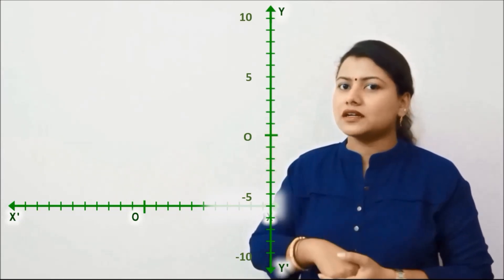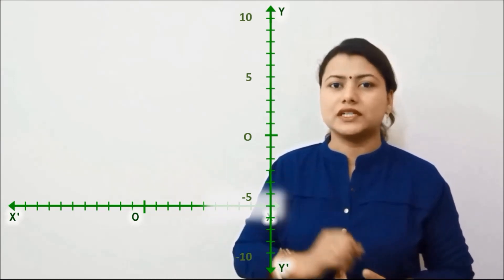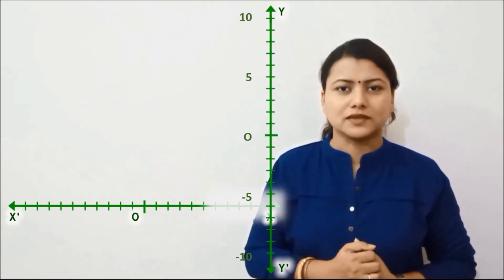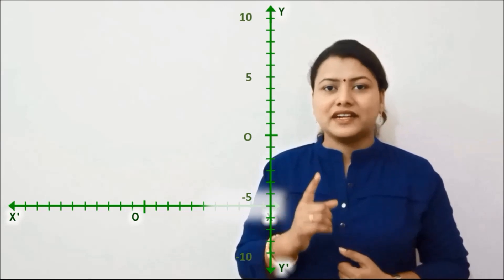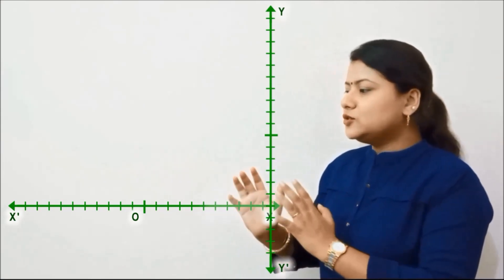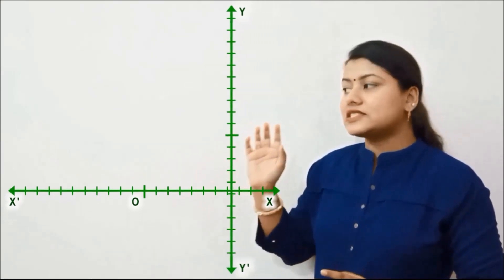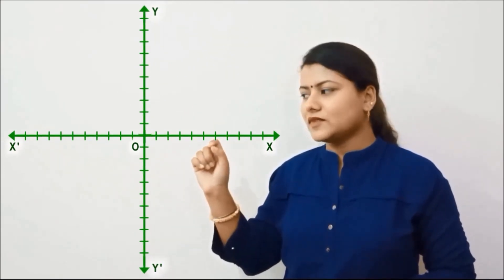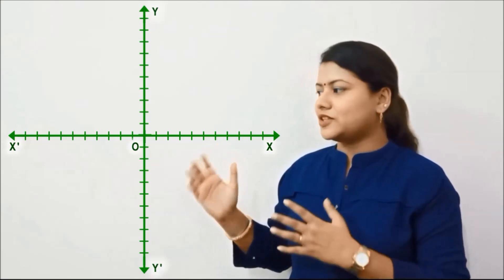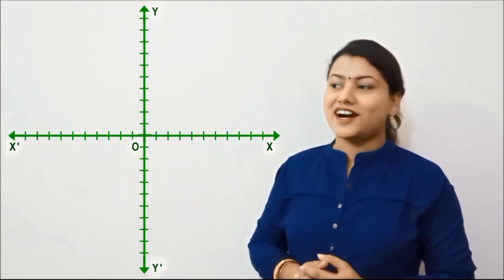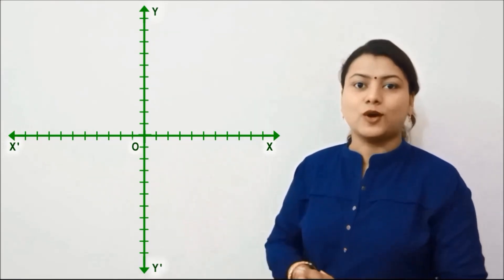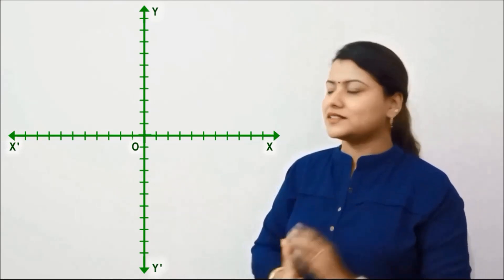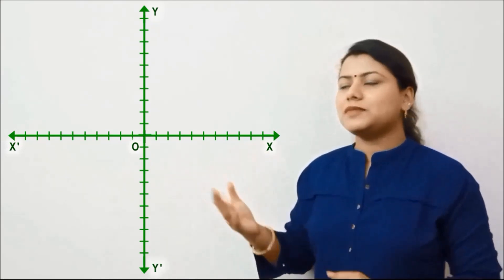For that, René Descartes suggested to keep both the number lines such that their zero should lie at the same point. So that's how he gets a Cartesian plane on his name, on his honor. So this is the Cartesian plane.